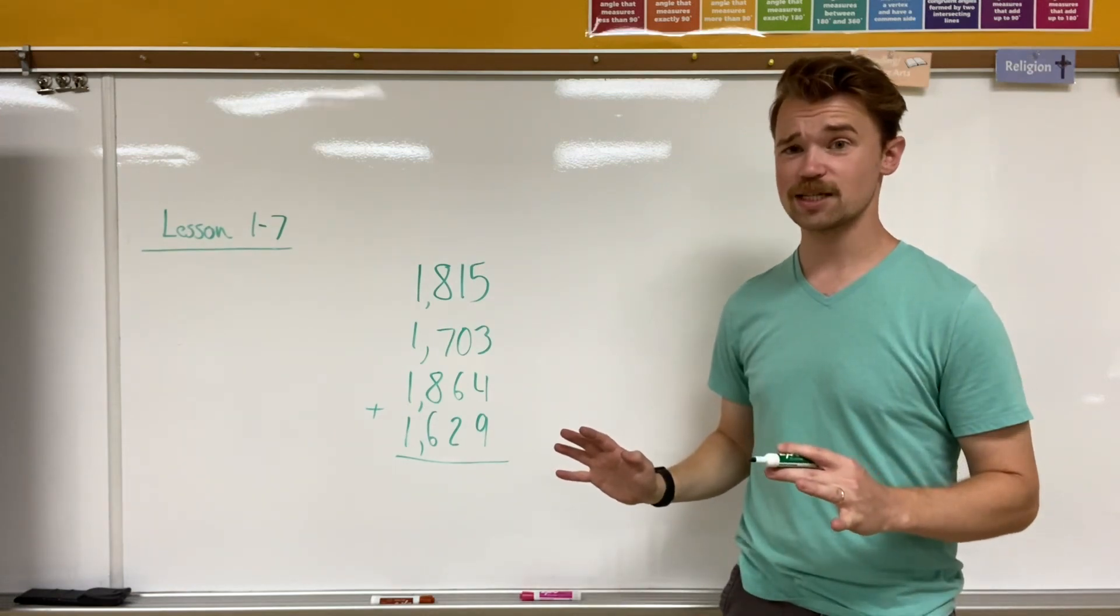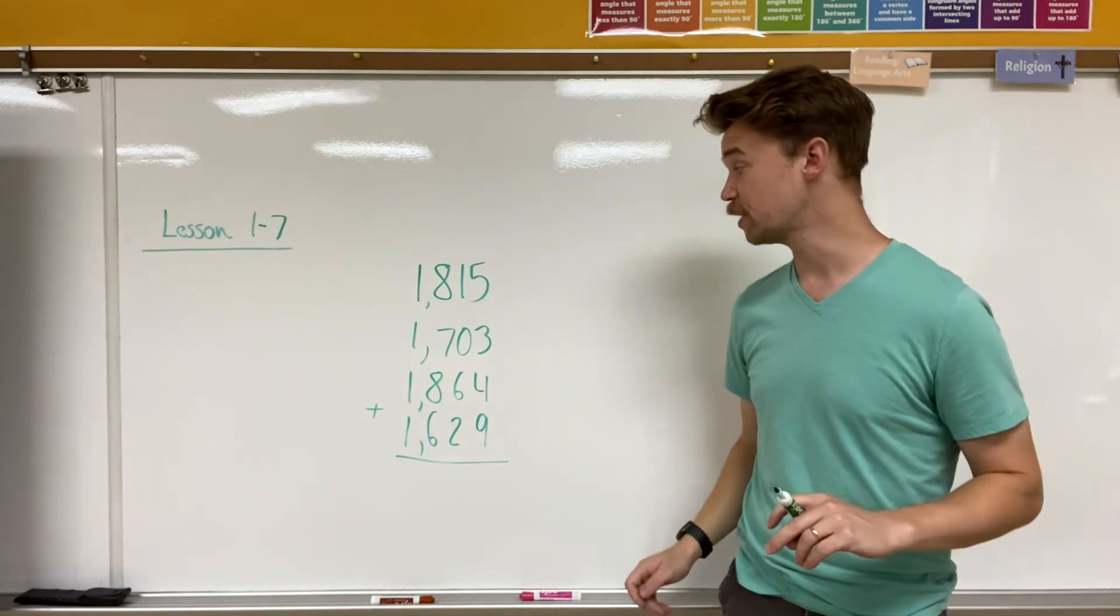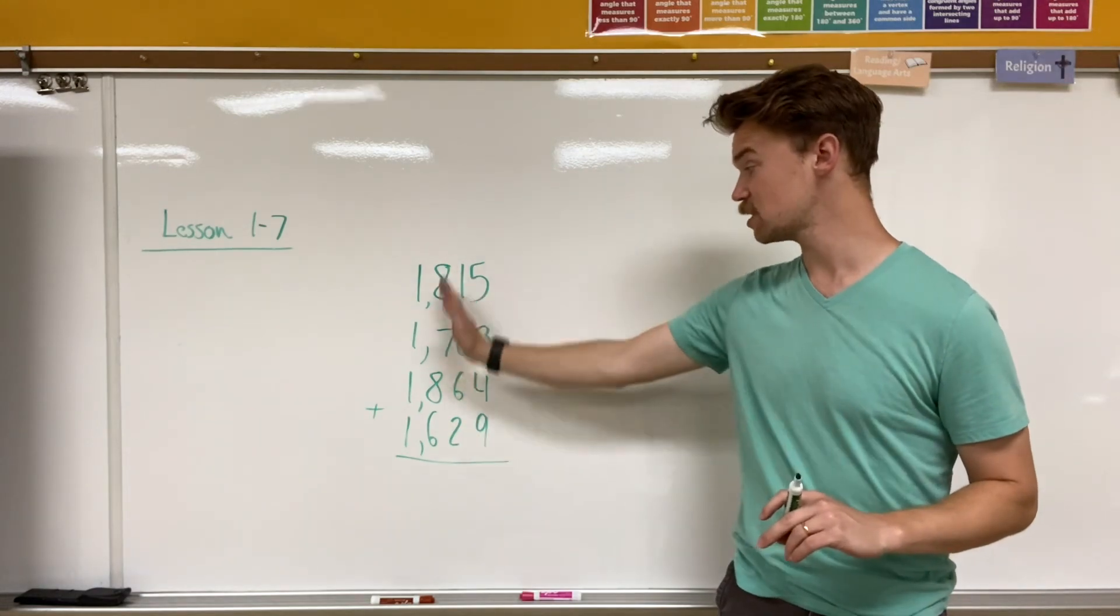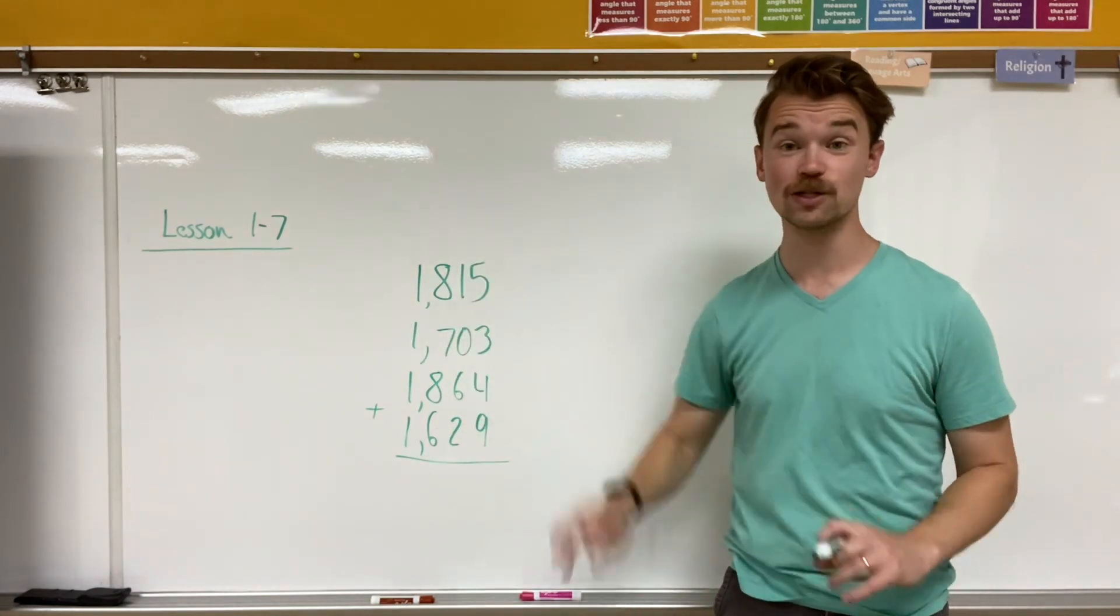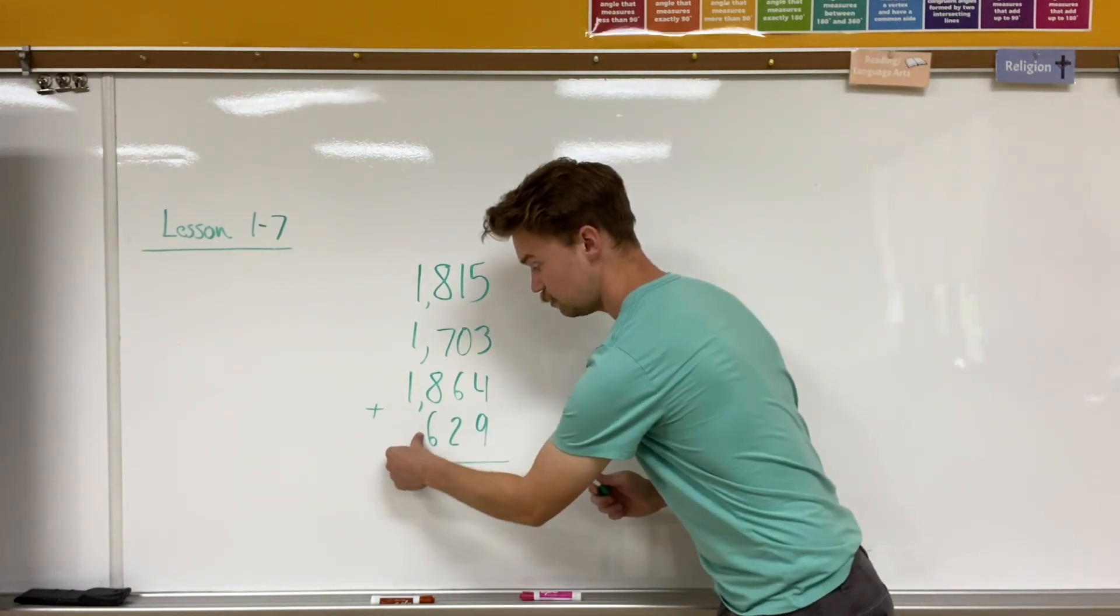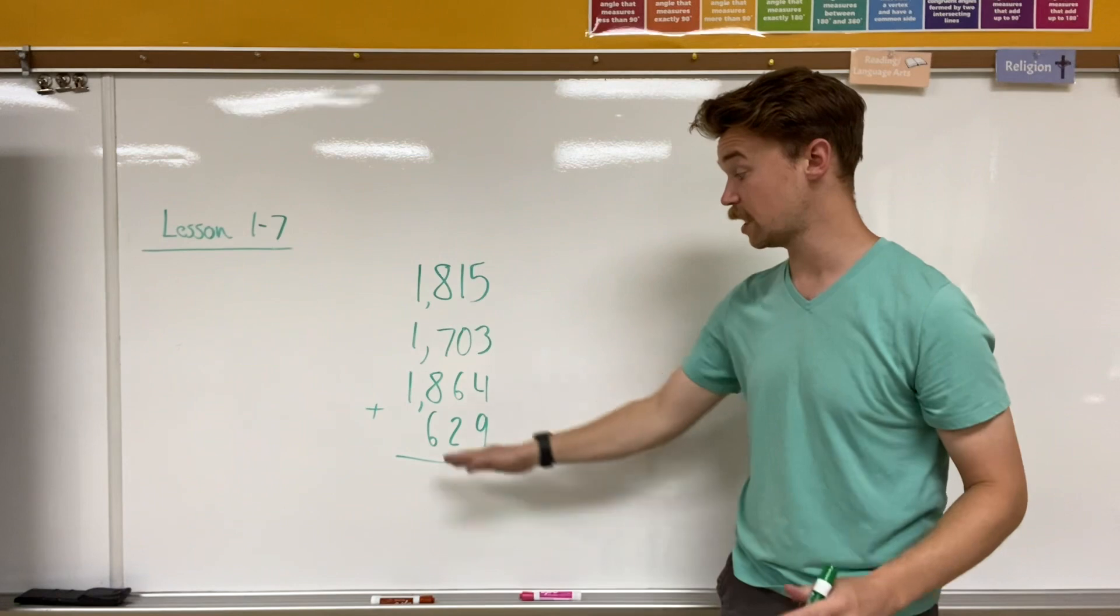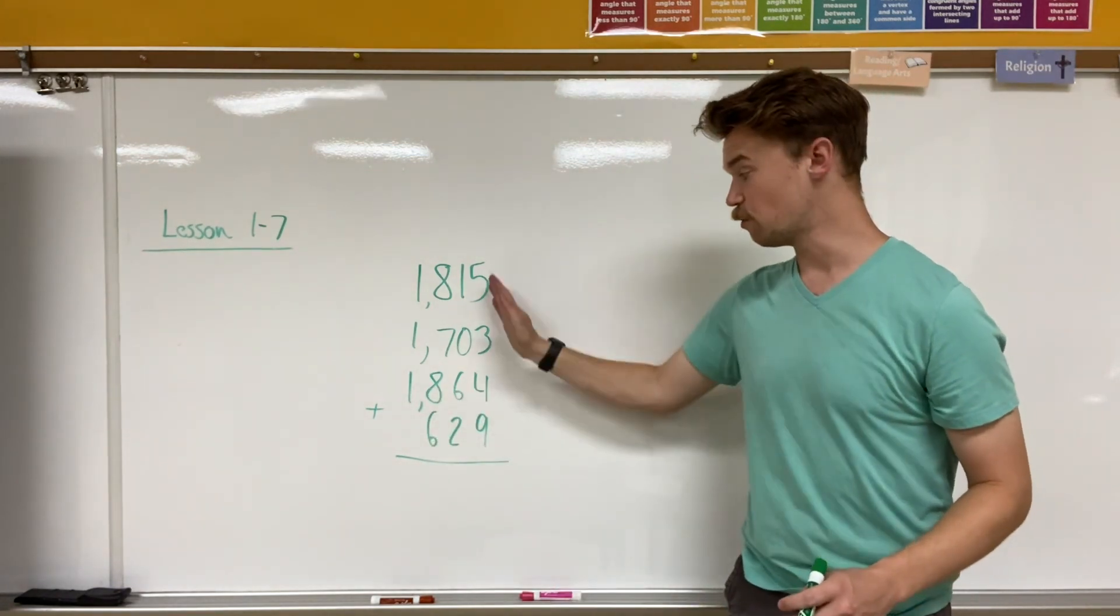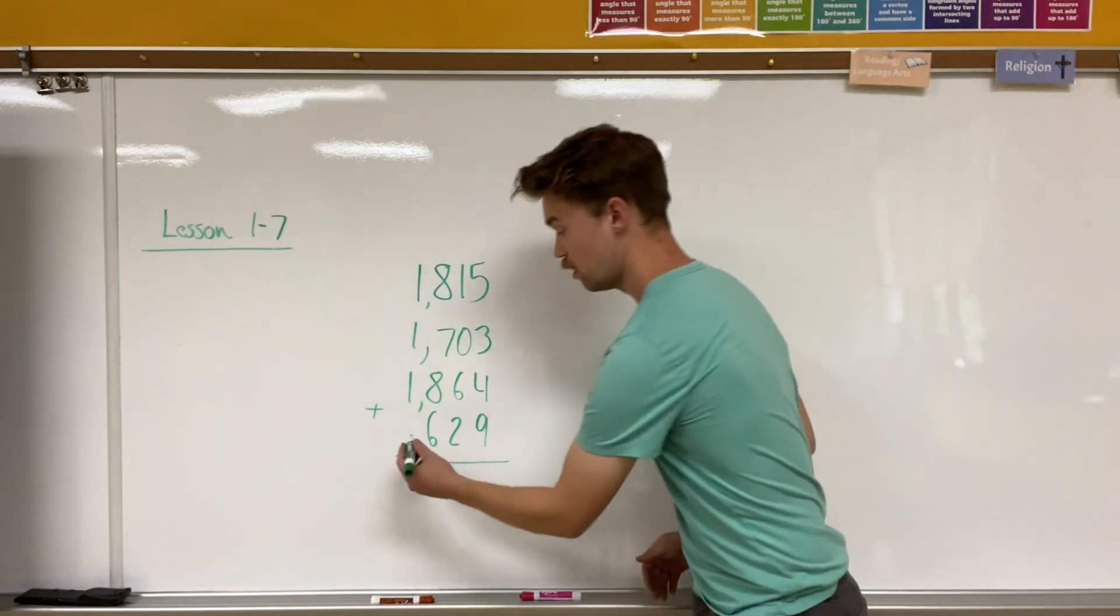But whenever we add or subtract something, first things first is we have to line it up place value by place value. Ones place has to be all in line, tens, hundreds, and thousands, and so on and so forth. Sometimes there are going to be numbers that kind of look like that, and it's going to have one place value missing. But as long as we have it lined up with the ones place on over to the left, we should be good.